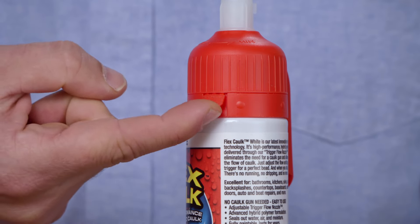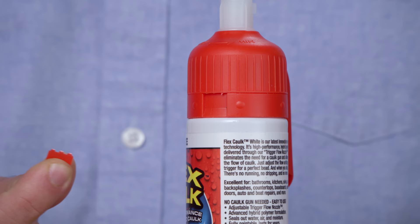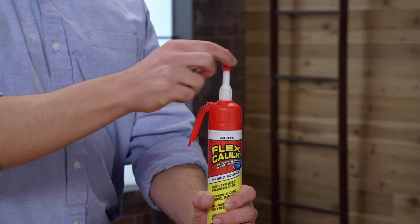To start using Flexcaulk, remove this safety tab and then remove the snap and save cap.